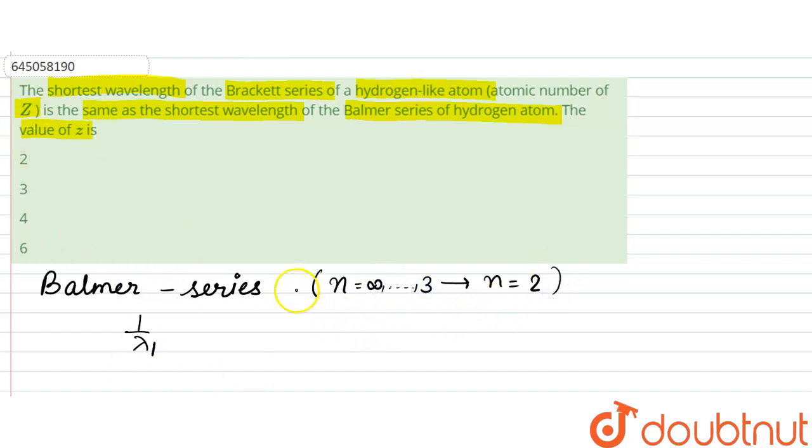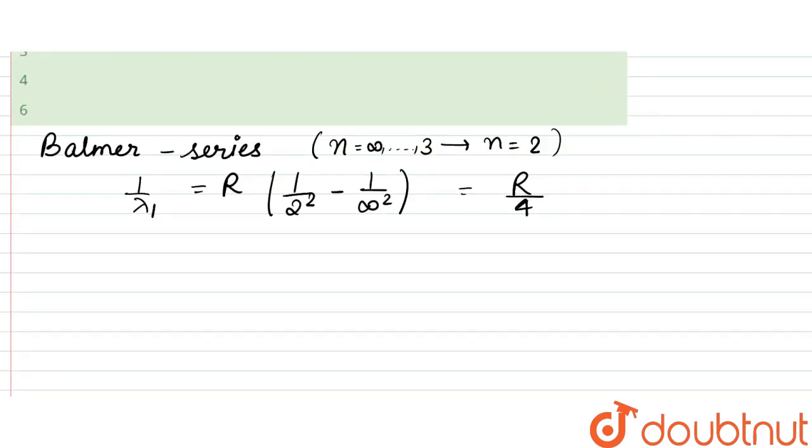So, that is the condition. That is equal to R, that is Rydberg's constant, into 1 by 2 squared is the final one, and 1 by infinity squared is the initial one. So, that turns out to be equal to R by 4, since 1 by infinity would be 0.